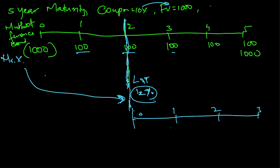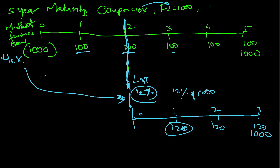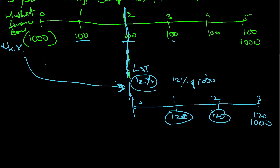If LNT's bond is also issued at par, the bondholder will get 120 per year — that is 12% of 1000 — plus the principal at the end. So nobody will be interested in buying Mr. X's bond, because people prefer the LNT bond paying 120 over the Motud Finance bond paying only 100. But Mr. X still wants to sell, so he will have to reduce the price of the bond to attract investors.